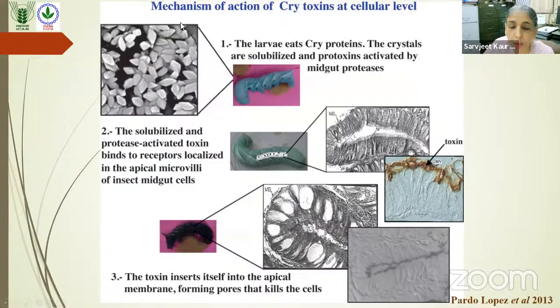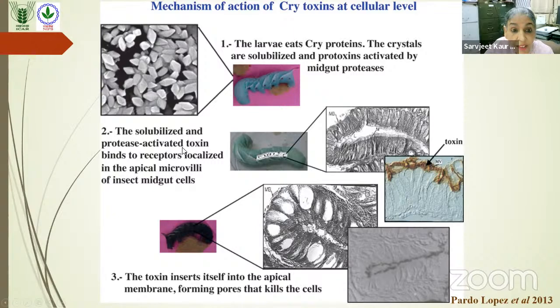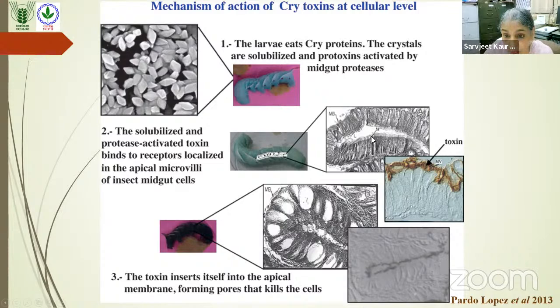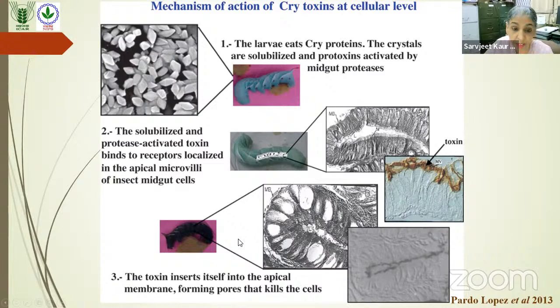How do these Cry toxins act in the insect midgut? The insect ingests the crystals, which in the alkaline pH of the midgut are solubilized. The protoxin is activated by proteases of the insect midgut to give rise to an activated toxin. This active toxin then binds to microvilli receptors in the insect midgut epithelium, leading to pore formation and disintegration of the midgut, which ultimately leads to insect death.